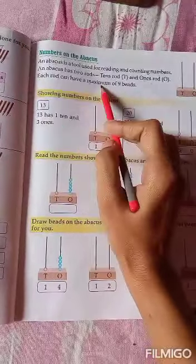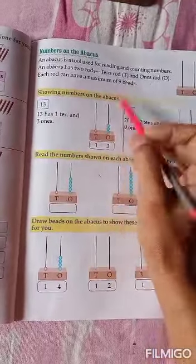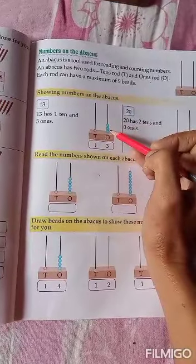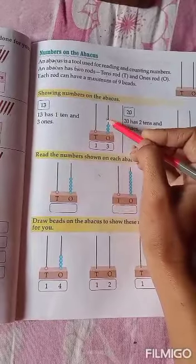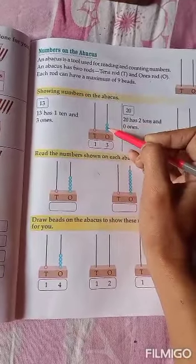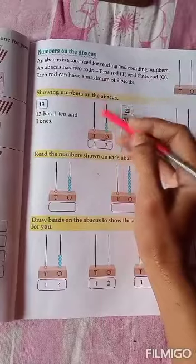Each rod can have a maximum of nine beads. Maximum, what you want to do is 9 beads. How much do you want to do? 9 beads. Maximum means more and more.